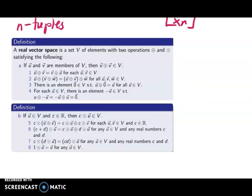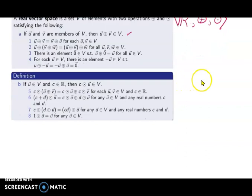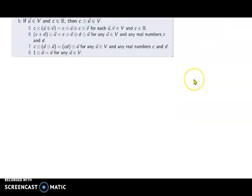So our goal now is to show that rn together with this vector addition and this scalar multiplication is a vector space. So to show that one, looking back at our definition, we have to show all these properties. So unahin muna natin ito. If u and v are members of the set v, then u plus v is in the vector of v.